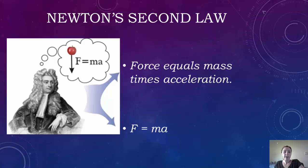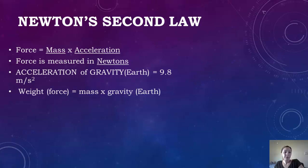Okay, so now we're going to look at Newton's second law of motion. It can be described as force equals mass times acceleration. Or in a formula form, it's going to be F equals M times A. So force is equal to mass times acceleration. The force is measured in Newtons. It's important to know that the acceleration of gravity on Earth is equal to 9.8 meters per second squared.